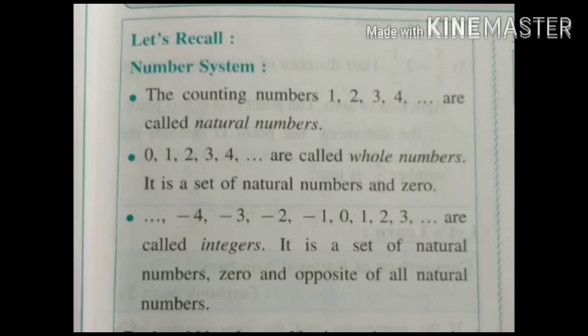Second one: whole numbers. Whole numbers are starting from 0, 1, 2, 3, 4 and infinite. Third one: integers. Integers means the collection of positive numbers, negative numbers, and 0.